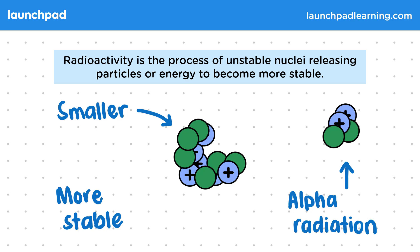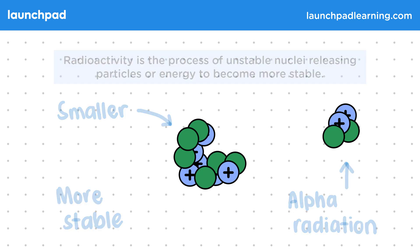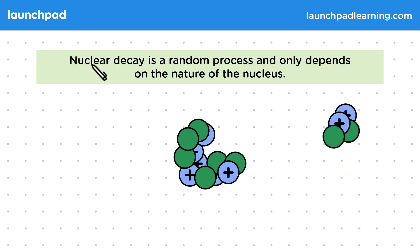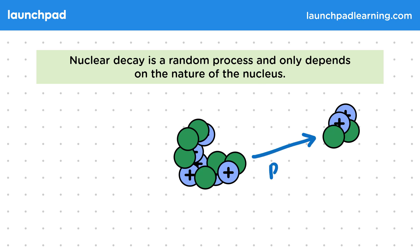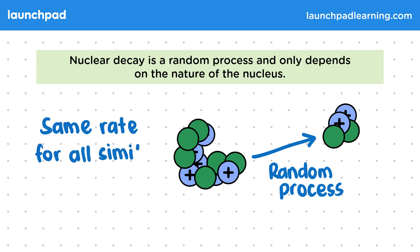But when will an unstable nucleus decay? Nuclear decay is a random process and only depends on the nature of the nucleus. We can't tell which nucleus will decay next, or when, but it's a similar rate for all similar nuclei.